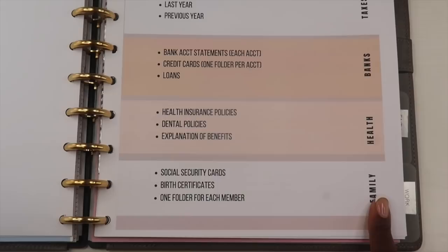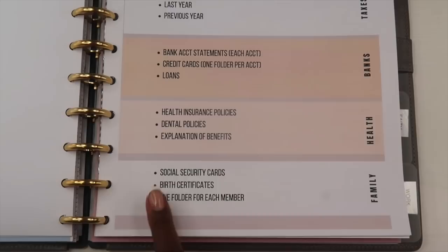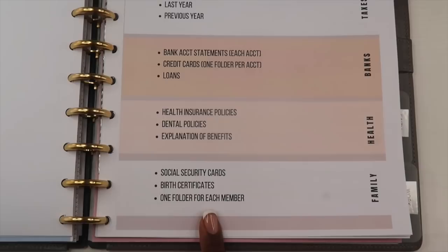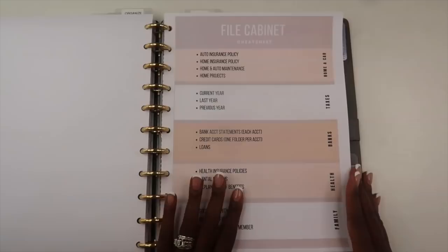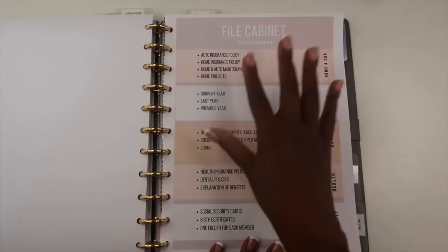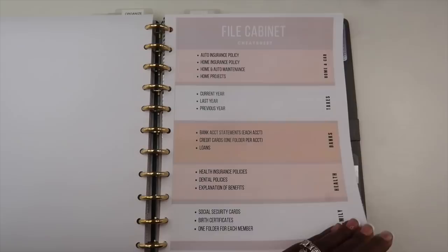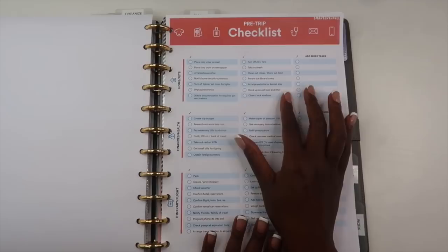The very last section in my file cabinet is called Family. Under this section I keep important documents: social security cards, birth certificates, passports, and a file folder for each family member — me, my husband, and our kids. Under the kids I might keep report cards or anything from school that's super important. I review everything in my file cabinet every single year to make sure everything is current.